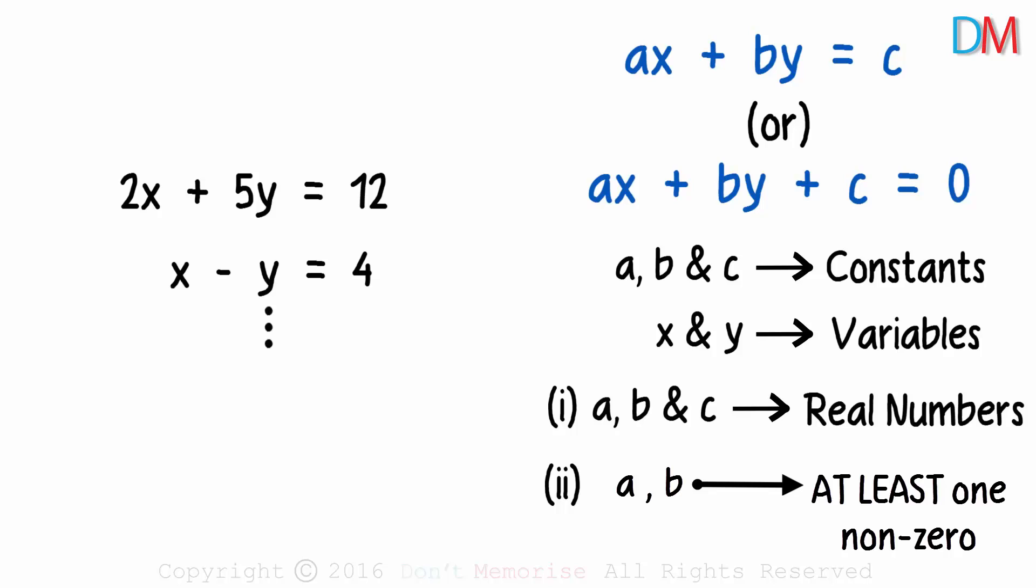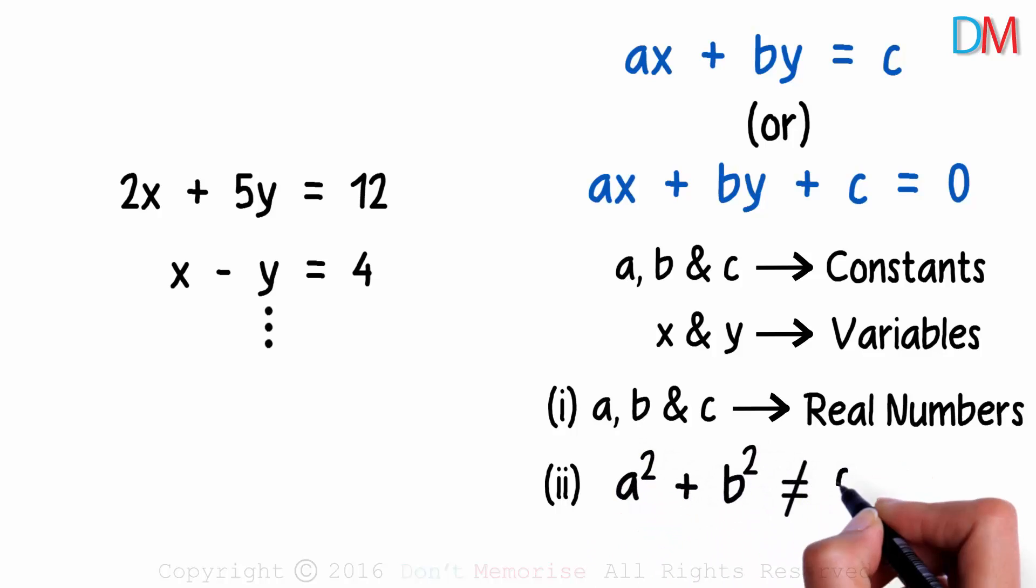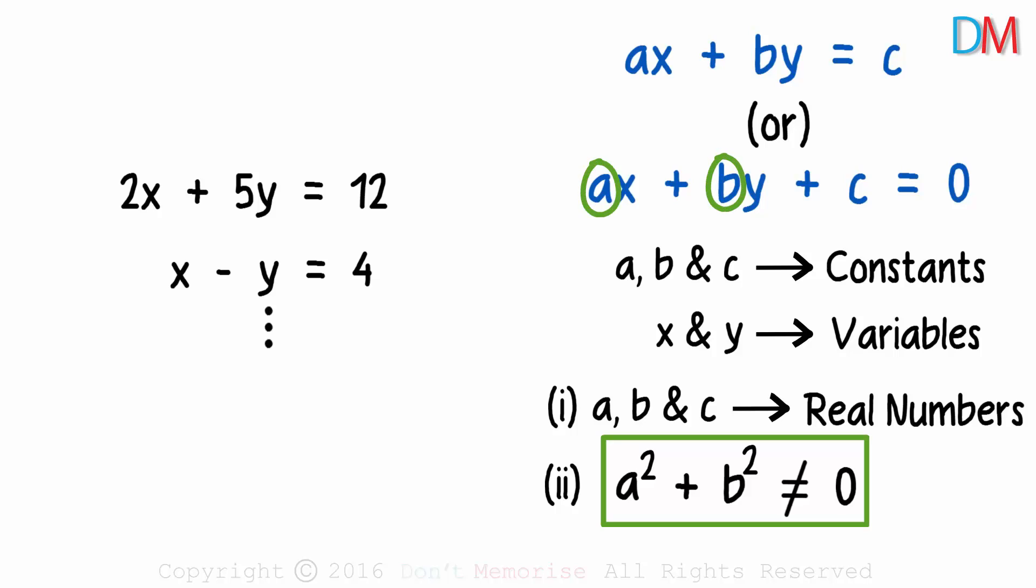Can you come up with a mathematical way to write the second condition? It's interesting and a very innovative way to write it. It can be written as a squared plus b squared will not equal zero. This will imply that both cannot be zero together. Because if both are zero, then the left hand side will equal zero.